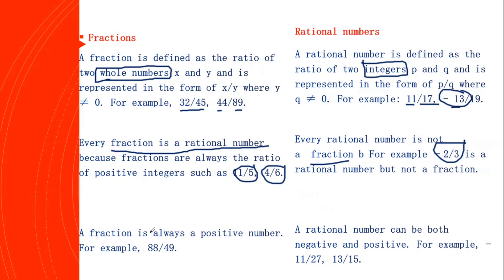One more difference is that a fraction is always a positive number because whole numbers are positive. So 88 by 49 is an example. But rational numbers can be negative or positive — for example, minus 13 by 19 that we discussed. So it can be negative as well as positive. This is the main difference between a fraction and rational numbers.